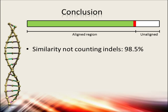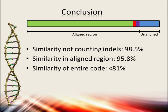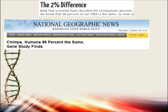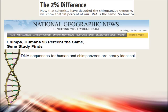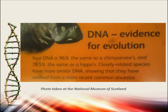Conclusion: excluding indels, the similarity is about 98.5%. Excluding unalignable data, the similarity is about 95.8%. In reality the similarity is less than 81%. So the next time you see claims of 99% or 96% DNA similarity — even from very reliable sources like National Geographic or in your local museum — you know what it means.